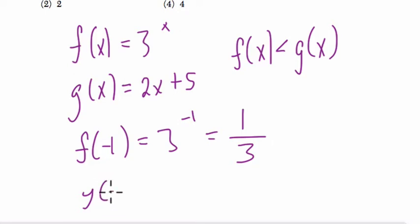While g of negative 1, same value, is 2 times negative 1 plus 5. That's negative 2 plus 5, or 3. So at this point, f of x is less than g of x.